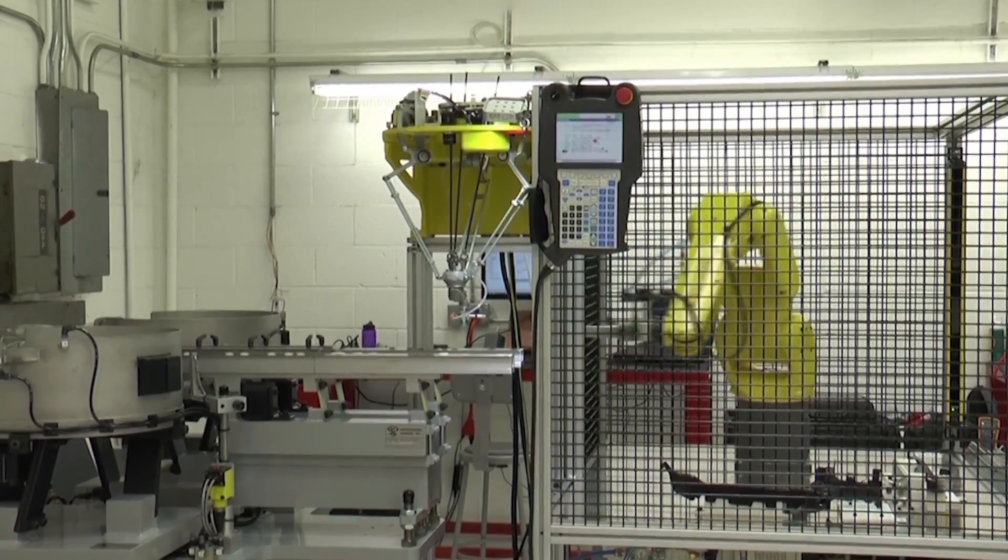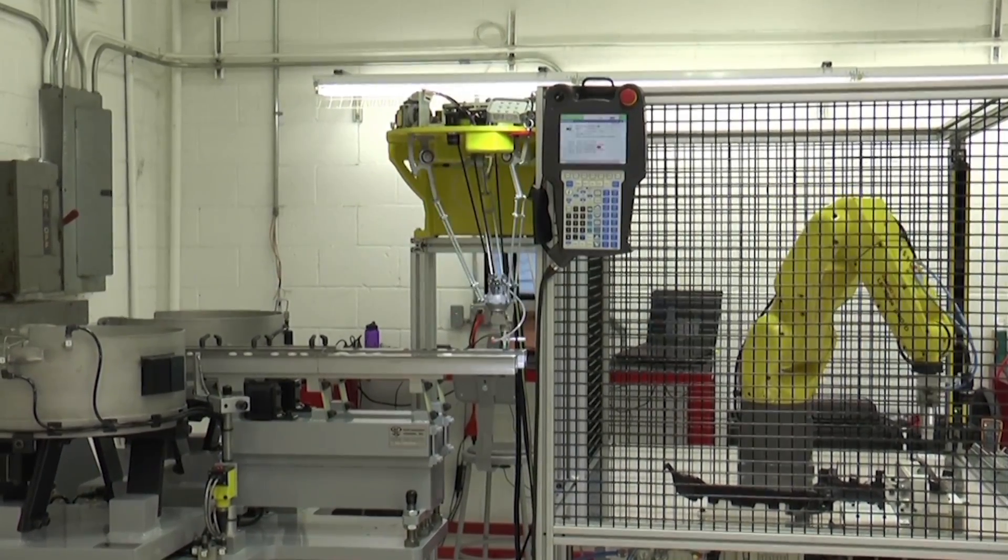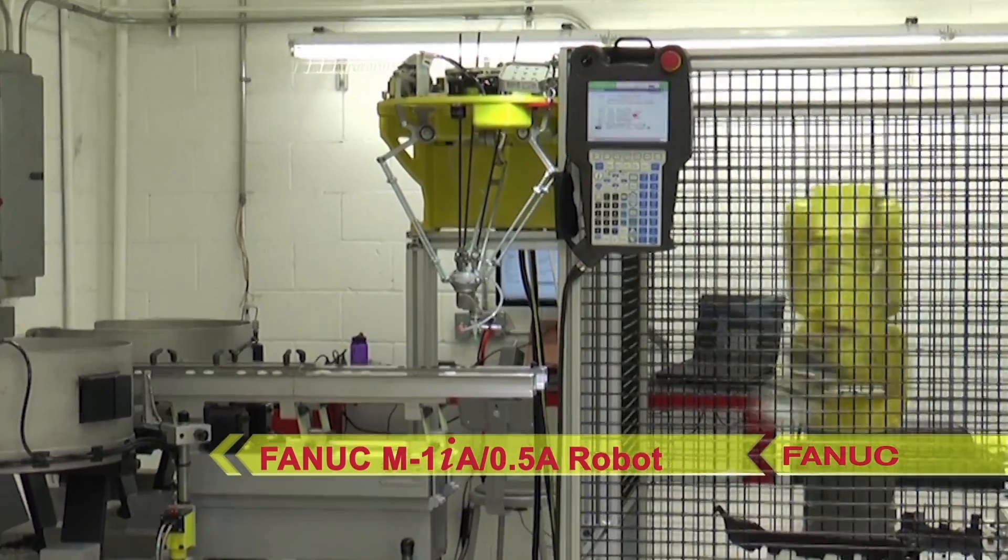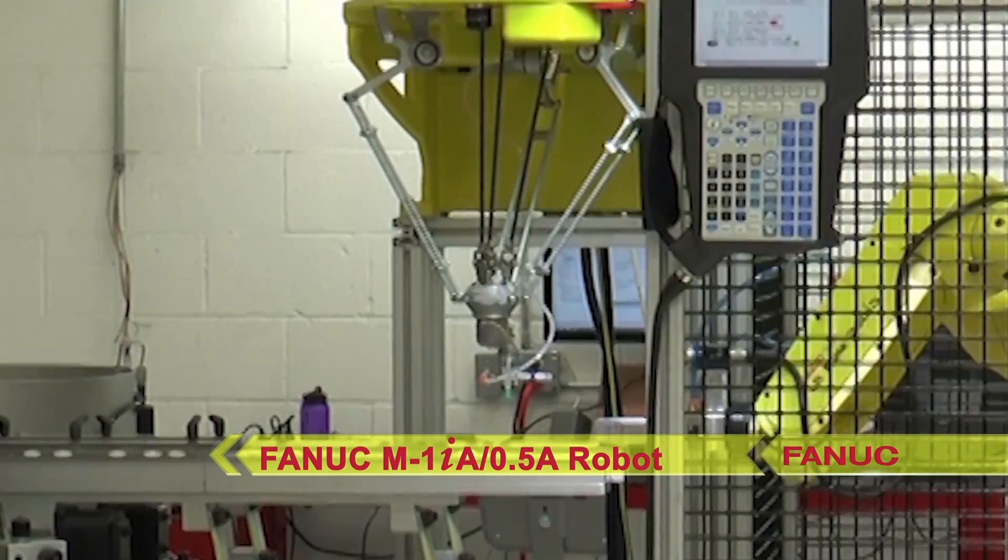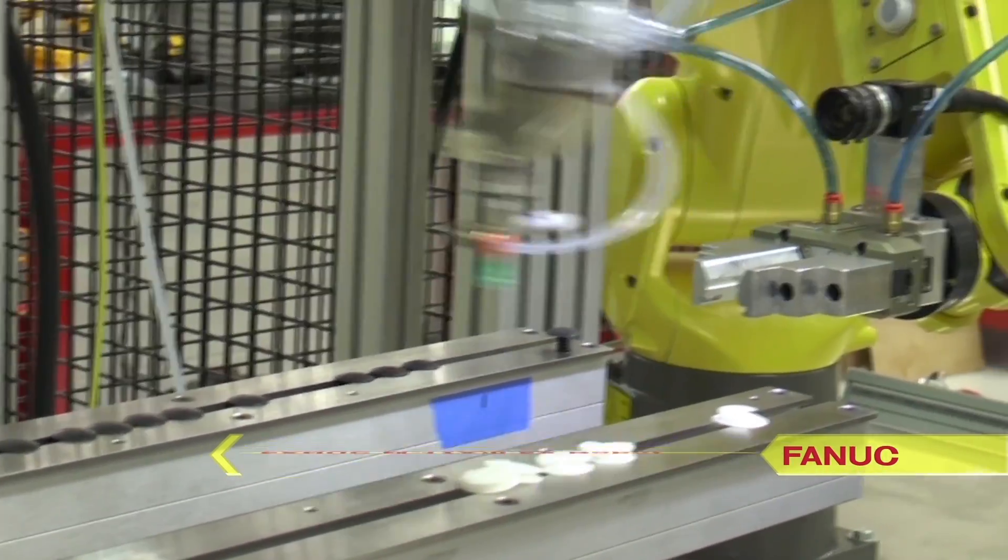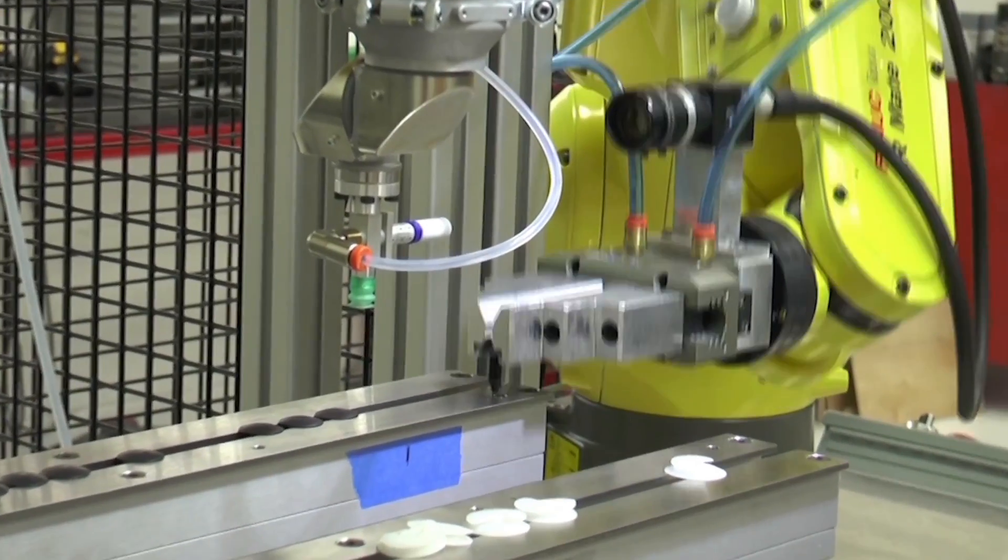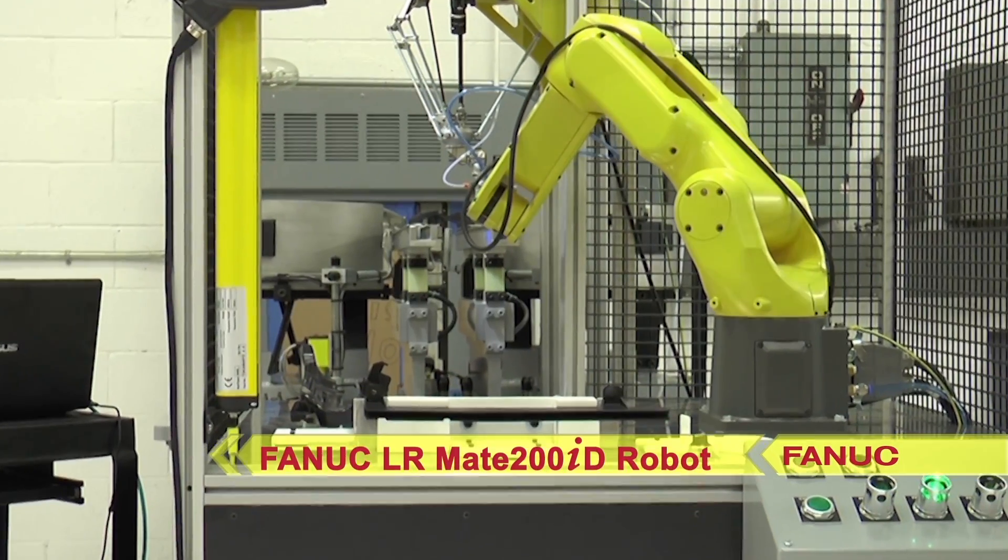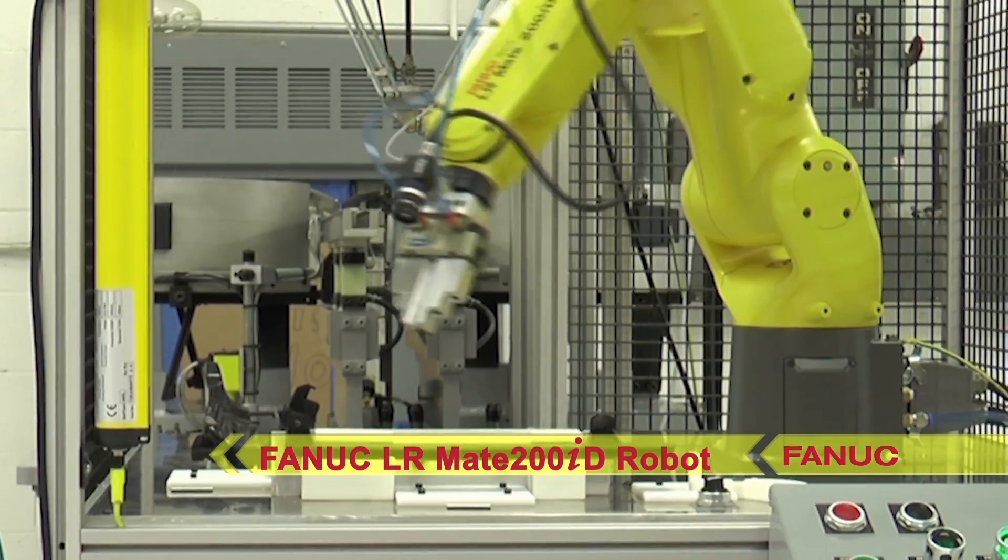The system utilizes two different robot models from FANUC. First, FANUC's high-speed M1IA .5A 6-axis delta-style robot is used for its precise pick-and-place capabilities. The system also uses the versatile and compact FANUC LRMate 200ID robot for assembly of the parts.